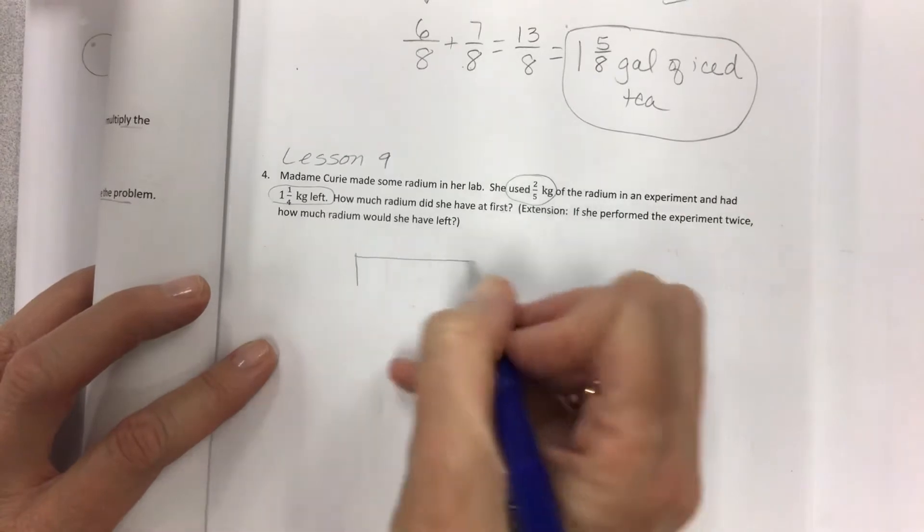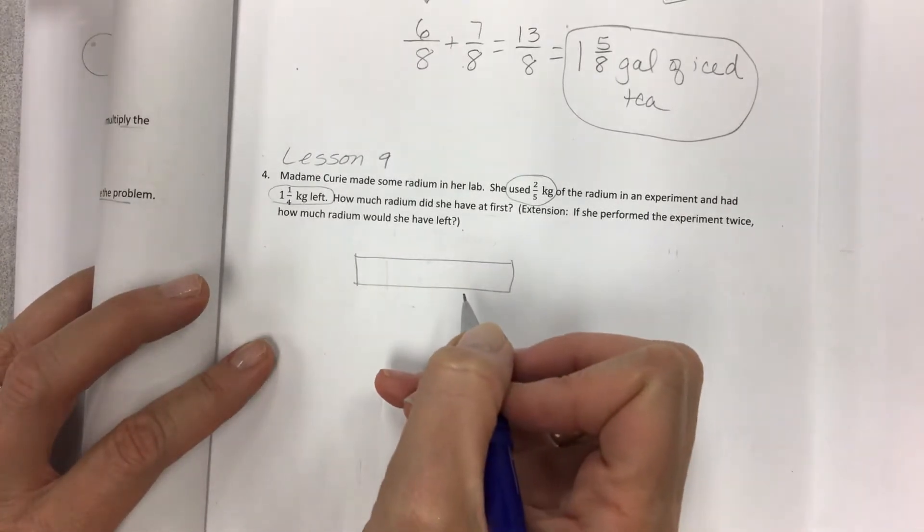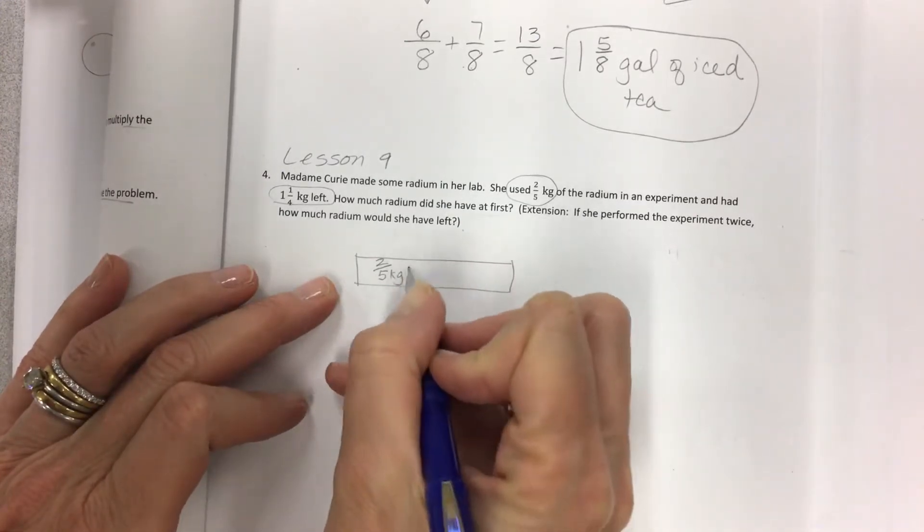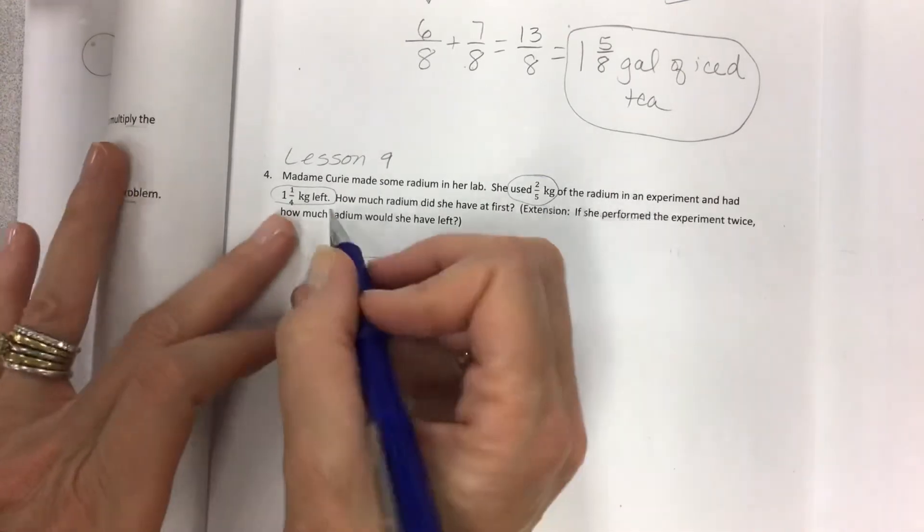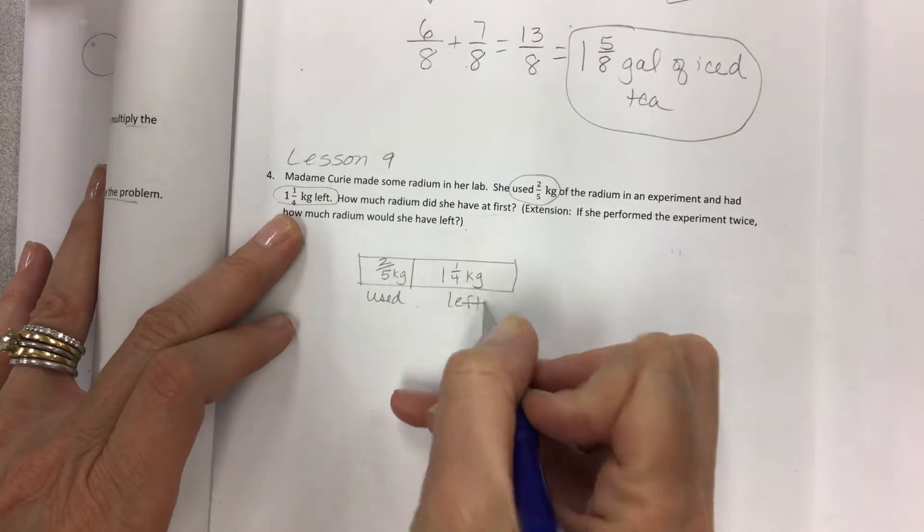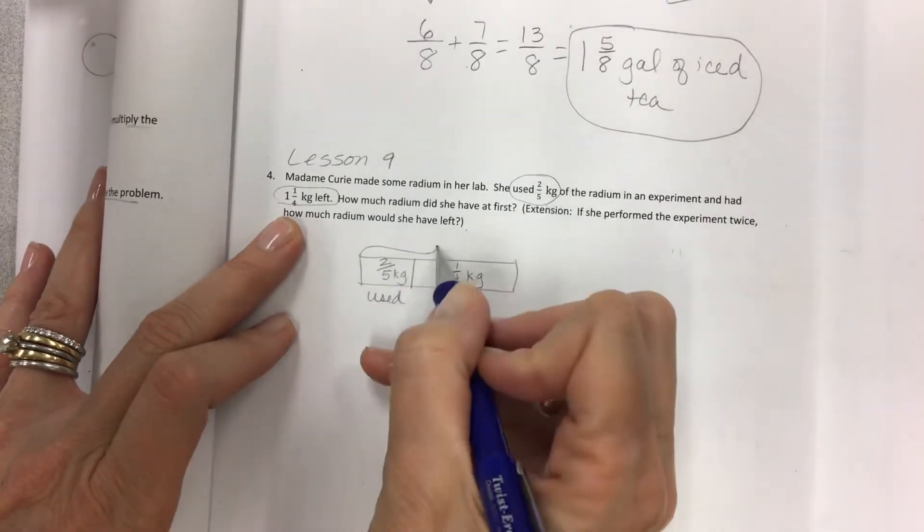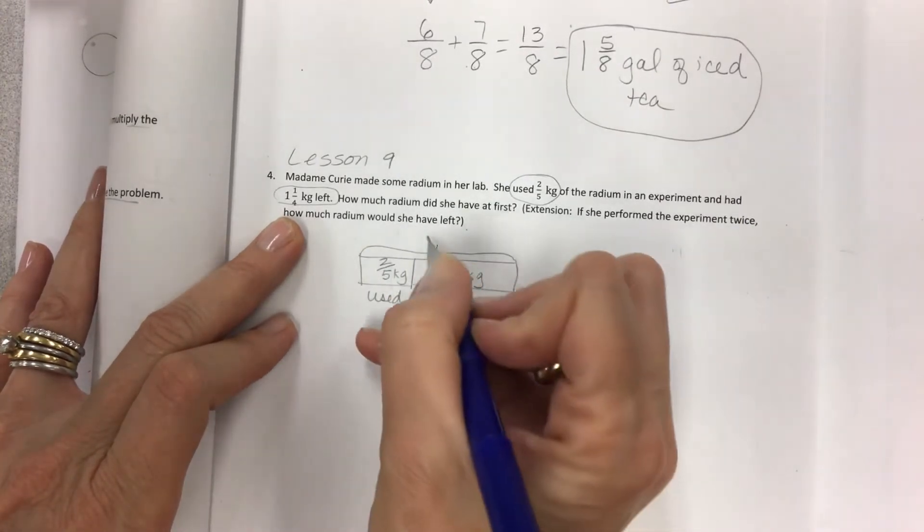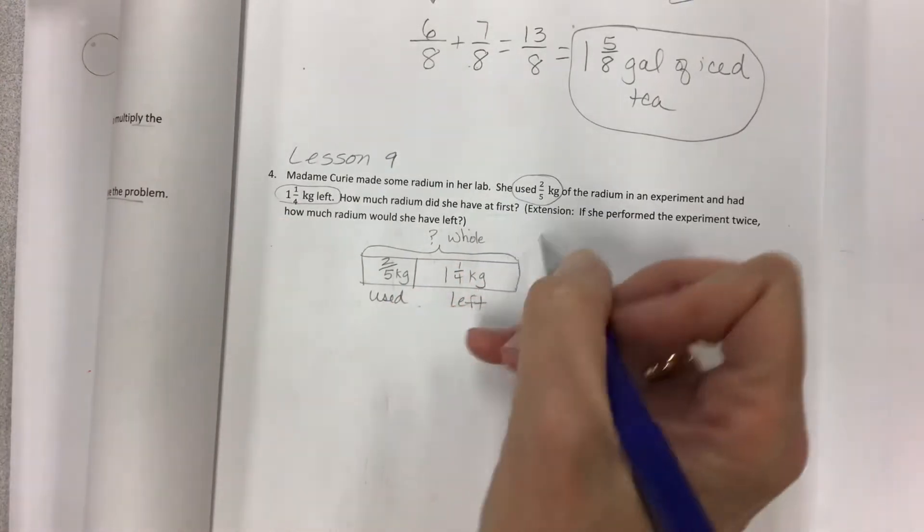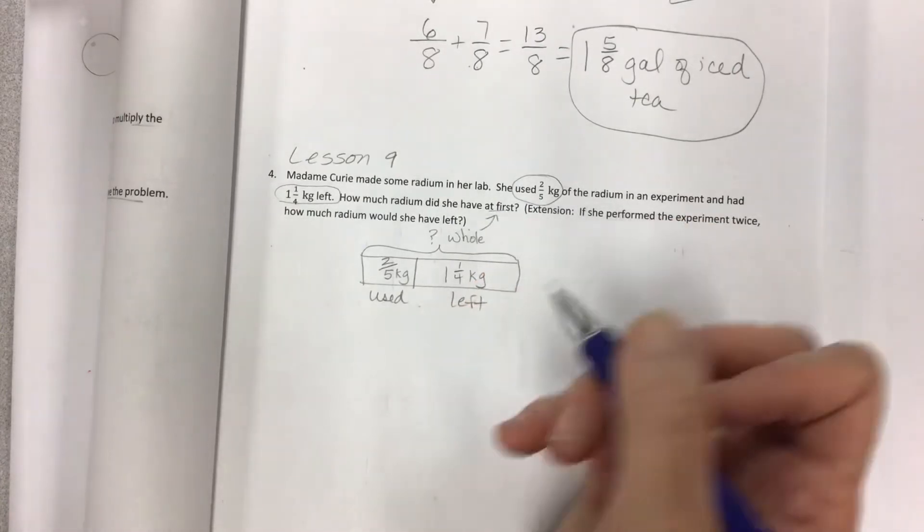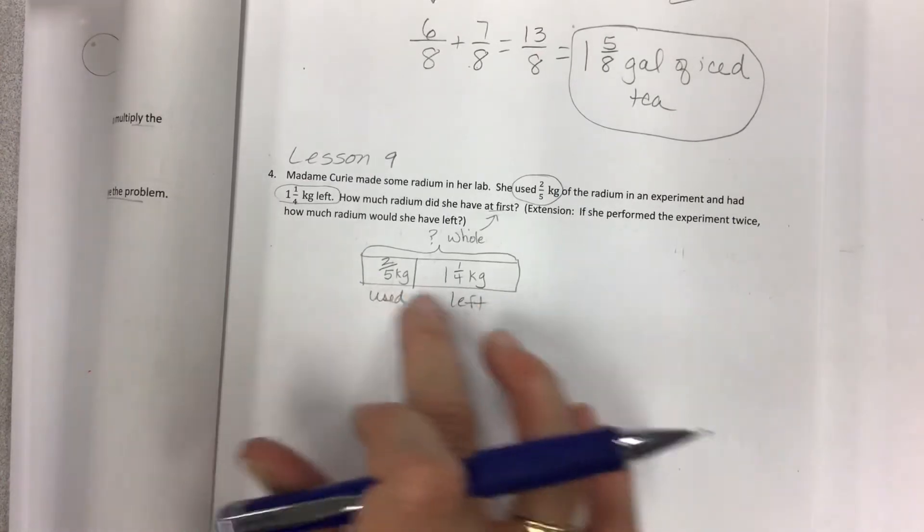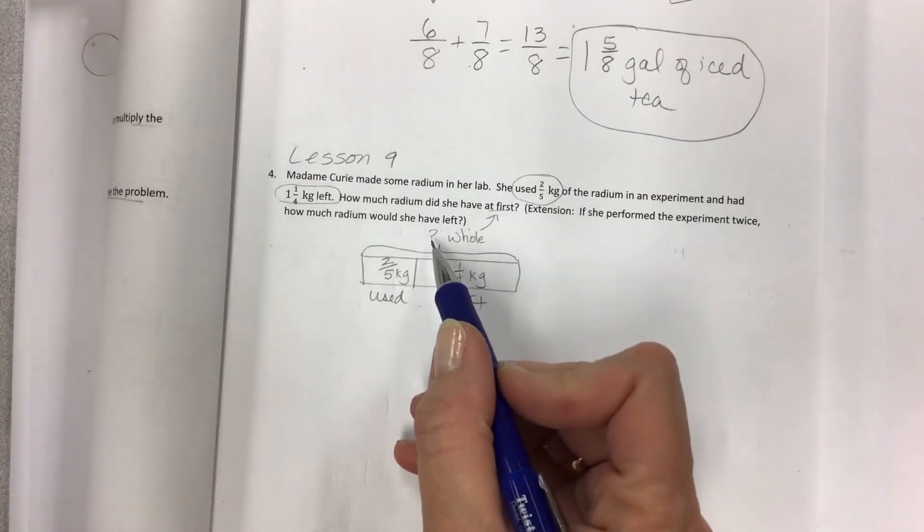So feels like a tape diagram problem. You can break it into parts. This is what she used, two-fifths kilogram was used, and then she had one and one-fourth kilograms left. But we don't know how much she had at first, so the whole is unknown. And so usually when this is a part-to-whole, you're trying to put these two pieces together to get the total.